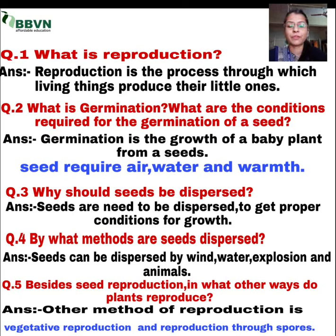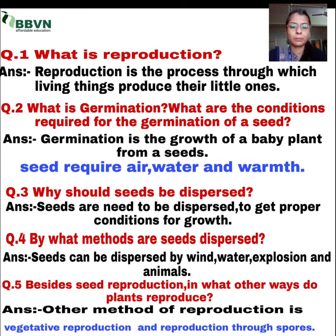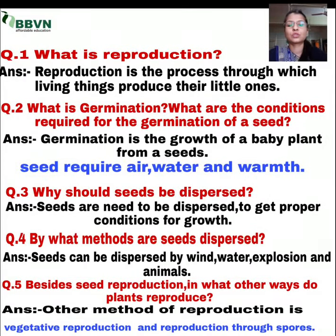Next question, question number five: besides seed reproduction, in what other way do plants reproduce? Jo seed reproduction ke alawa, woh kaun kaun se reproduction ke ways hote hain jinse plant ka reproduction hota hai? Other methods of reproduction are vegetative reproduction and reproduction through spores. Vegetative reproduction mein jo plant ke body parts hote hain, unki help se kis tarike se plant reproduction karta hai. Yeh the other methods of reproduction.